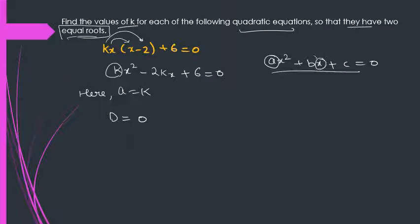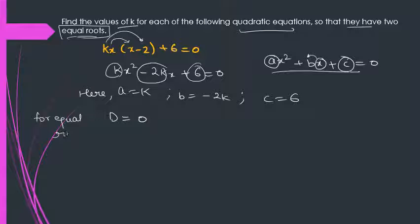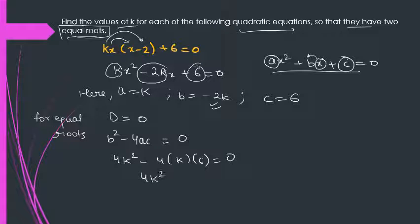Now, if you see the coefficient of x, it is b. Whereas here the coefficient of x is -2k. And the constant term is c. The constant term here is 6. Now, for equal roots, we have D as zero. And what is the formula for D? It is b² - 4ac. So what is b? It is (-2k)². That means 4k² - 4ac. So it will become 4k² - 24k = 0.